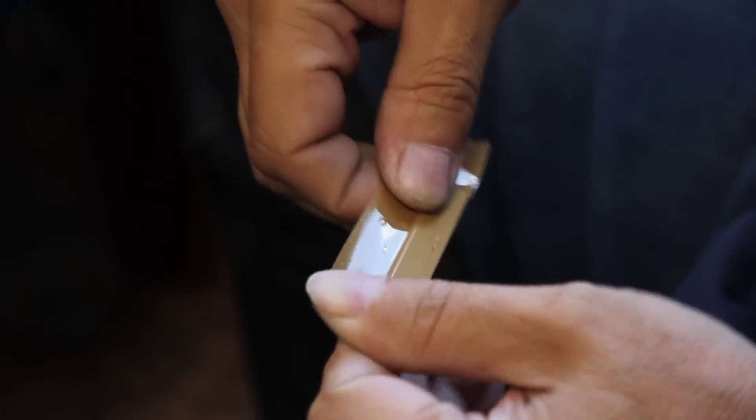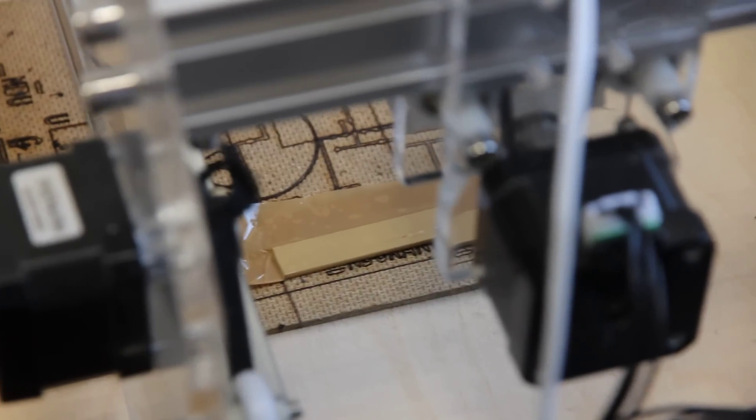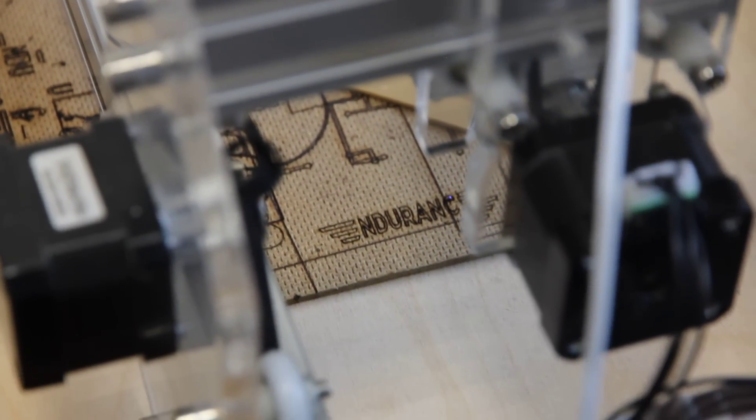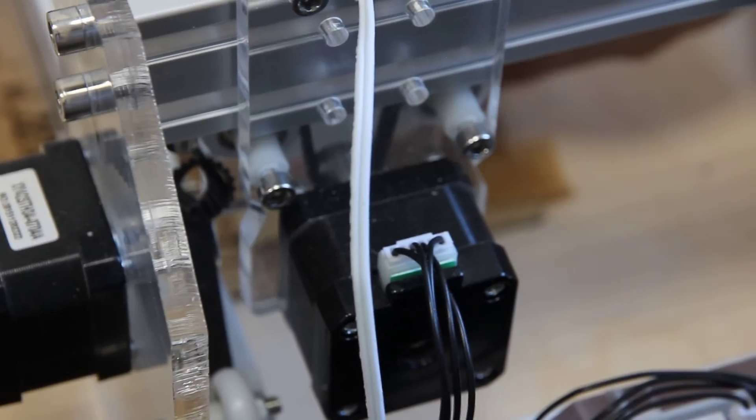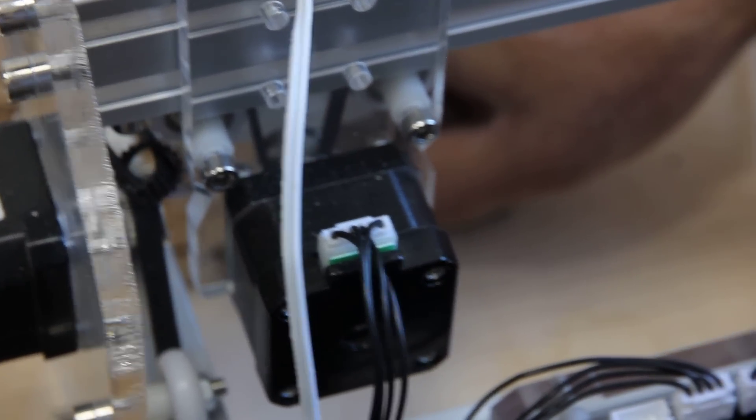Now we put it on the Endurance DIY engraving machine and we set up the zero point. You see that it has to be placed accurately.